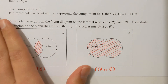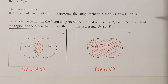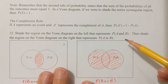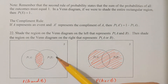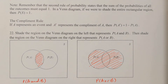From that, we have the complement rule, which says that if A represents an event and A complement represents the complement of A, then the probability of A complement is equal to 1 minus the probability of A. The 1 comes from the fact that the probability of the sample space equals 1. You're really taking everything in the sample space and removing everything in A to get everything in A complement.